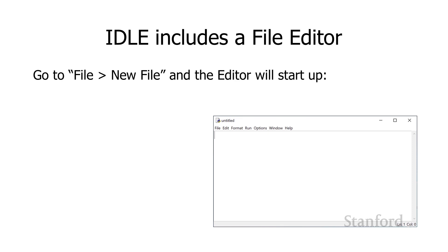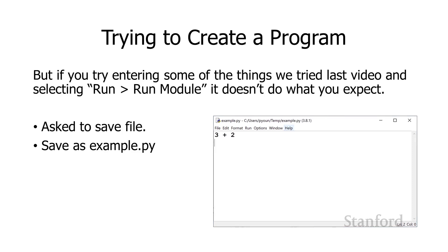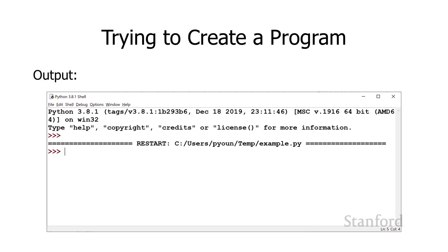You will see what's being shown on the bottom right. Our first attempt here could be just to retype what we were previously typing into the Python shell. Remember last time we started out with just adding a bunch of numbers together, so say 3 plus 2, and put that into our editor. When we try and run it by going to the Run menu and choosing Run Module, it's going to ask us if we want to save the file. I'll save it as example.py — Python files are stored with the extension .py. But if I run it, it does not do what I expect. You can see it is attempting to run my example.py file, but there's no output.